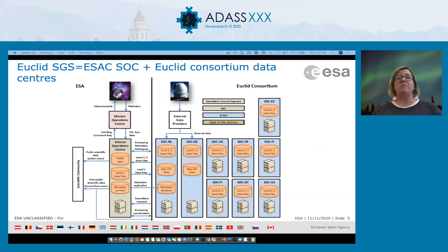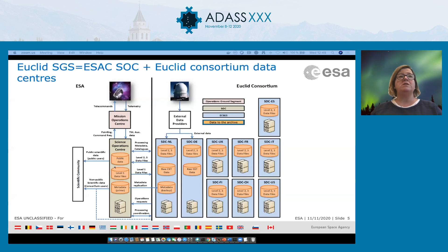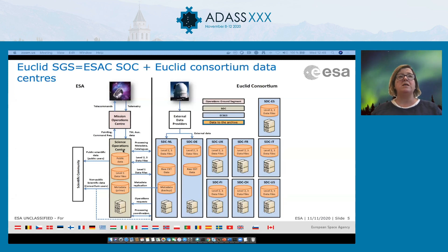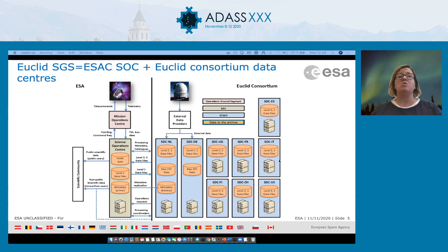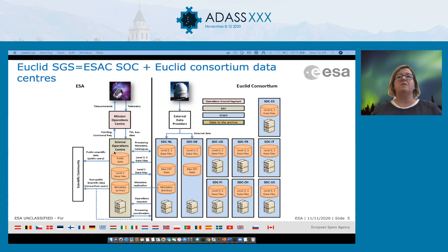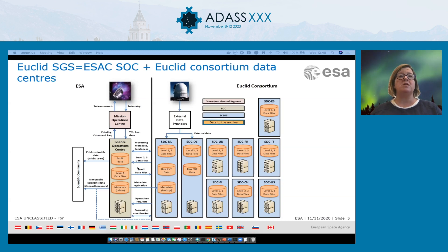Let's review the data workflow for Euclid. We go from the satellite data to Level 3 data to be published to the public. From the satellite, the data goes to the antennas, then to the mission operations center in Germany, and then to the science operations center at ISAC in Madrid. The Level 1 data is distributed to the science data centers around Europe and the US, and those centers process the data to get Level 2 and Level 3. We also receive external data for completeness from ground segment telescopes. All of this information returns to ISAC, to the Science Operations Center, and is transferred to the scientific archive, which makes data available first to scientists in the consortium and then to the general public.